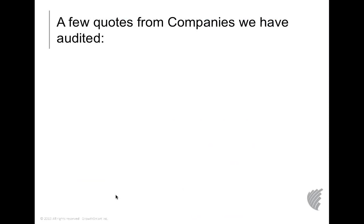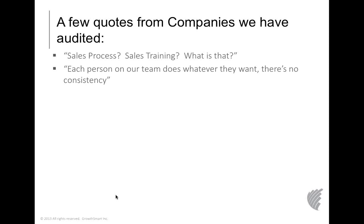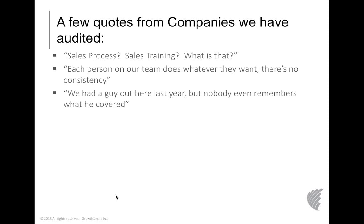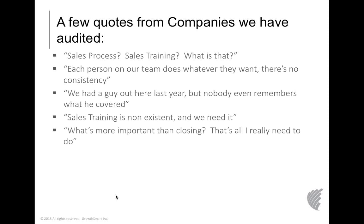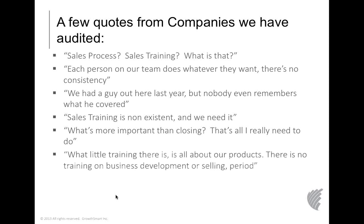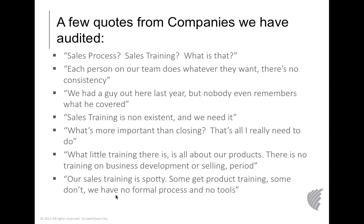When we do audits and start talking to salespeople and managers, we hear real quotes like: 'Sales process — what is that?' or 'Each person on our team does whatever they want, there's no consistency.' Or: 'We had a trainer come out a year ago, but nobody remembers it.' Or: 'What's more important than closing? That's all I really need.' That is the death spiral of your brand. Others say: 'All training is about our products — there's no training on business development or selling at all.'